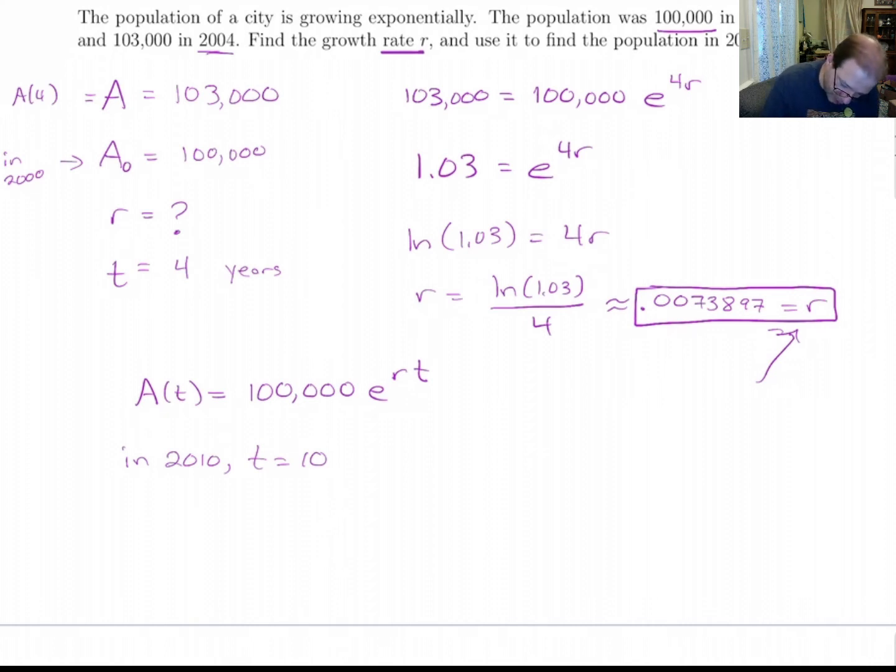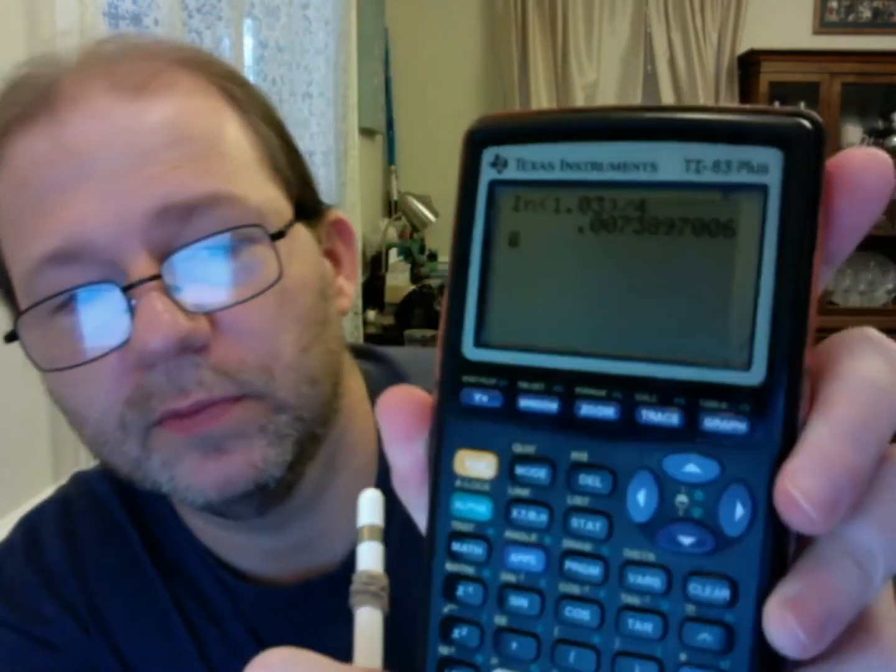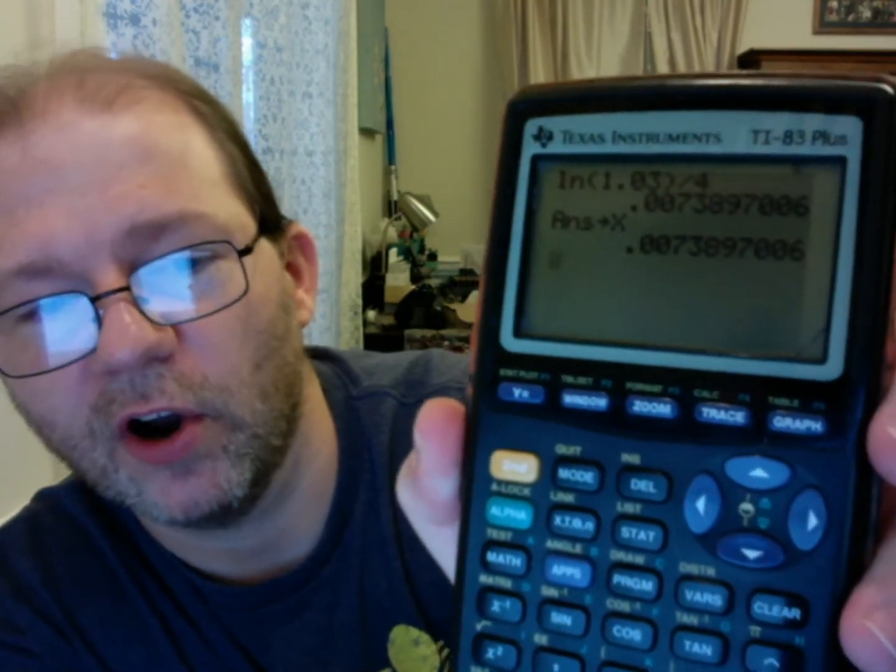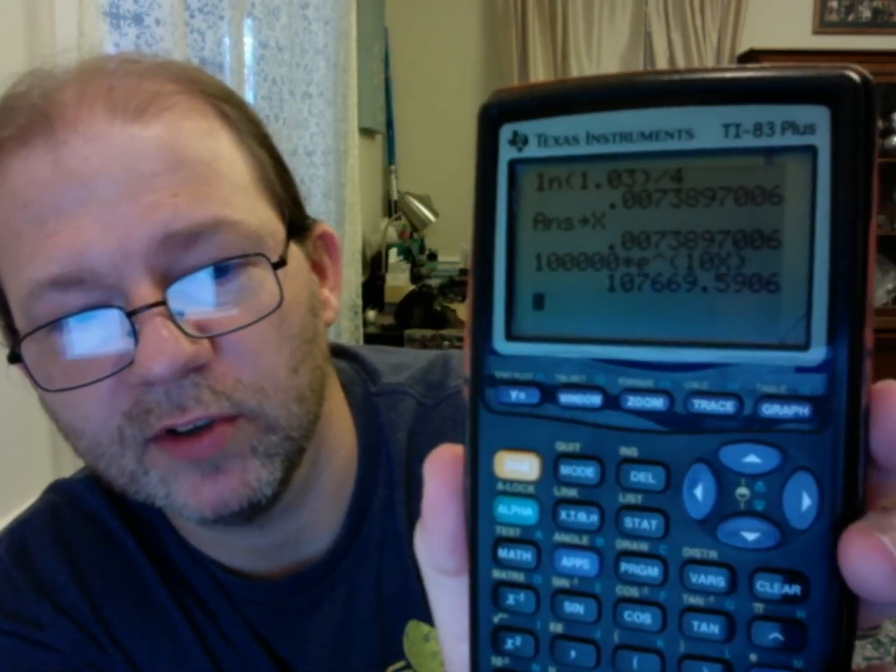Okay, so all we have to do here is do A of 10 equals 100,000 E to the 0.007, etc., times 10. Now what I'm going to do in my calculator, I've got this number here for my r. I'm going to store that as X. So it's called X. I could store it as R if I wanted to, but the name doesn't matter. And then I'm just going to do 100,000 times E raised to the 10X. That way it'll substitute that in without me having to do it again. And it gives me this number for my population.